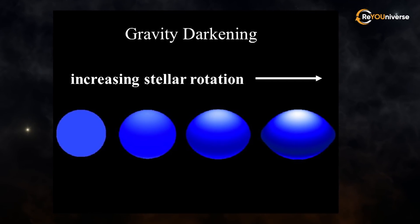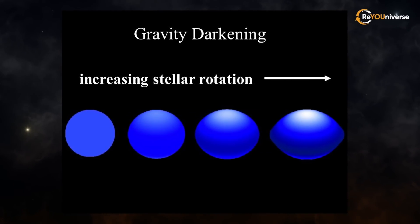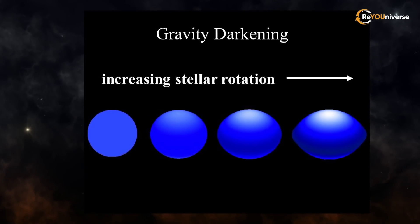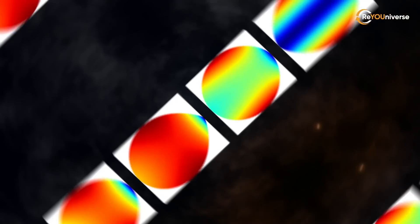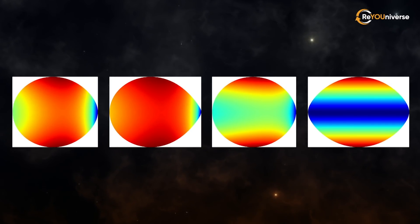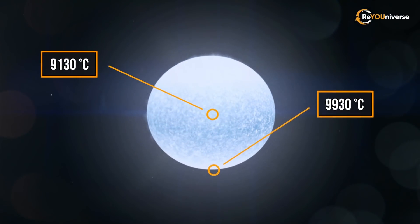The poles brighten as the equatorial region cools and dims by comparison. As a result, the temperature at the equator will be much lower than that at the poles. We are talking about 800 degrees difference.